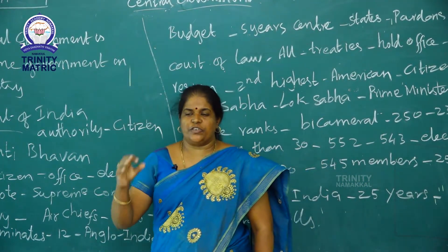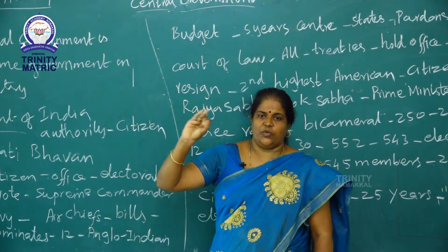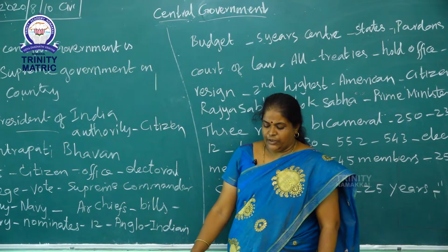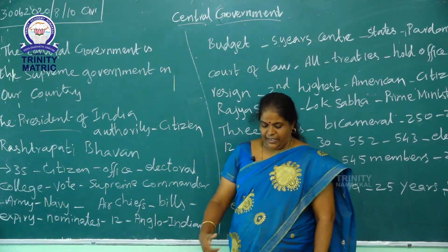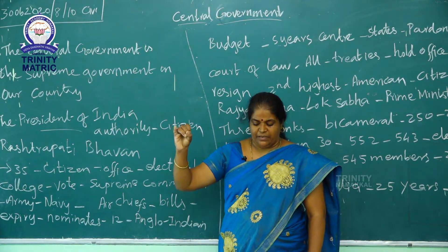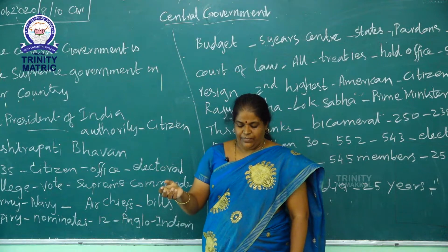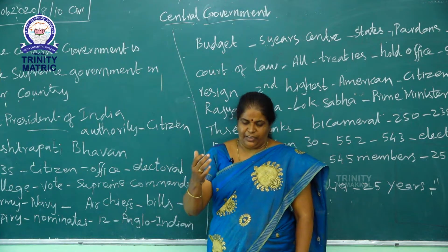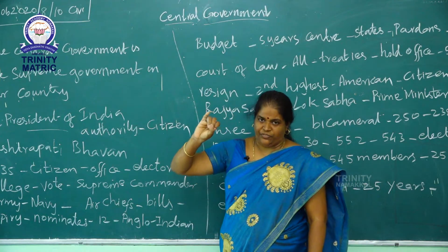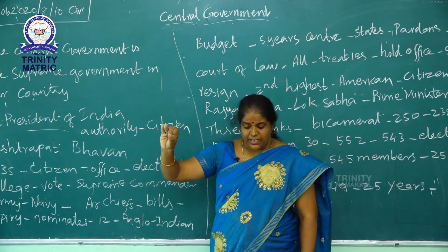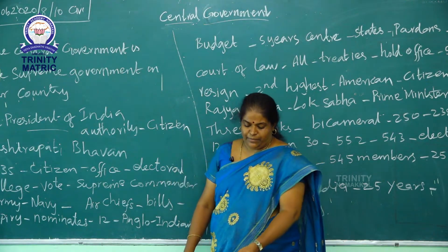In the Indian constitution there are three wings: executive, legislative, and judicial. The union executive consists of the President of India, the Vice President, the Council of Ministers headed by the Prime Minister, and the Attorney General of India.